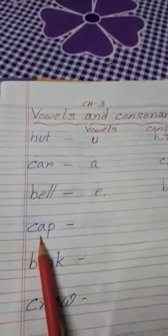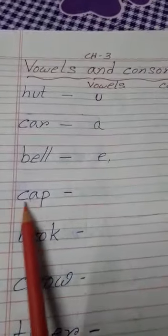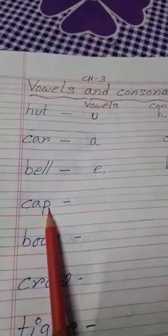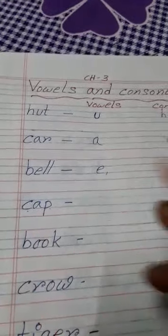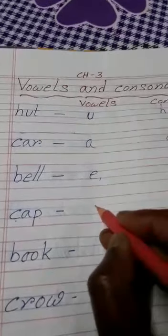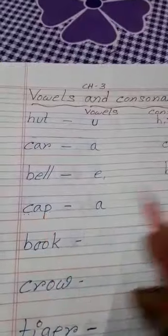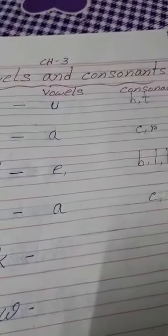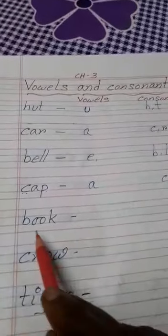Now what is this? C, A, P — cap. Now tell me, which is vowel here? A is a vowel. And C and P are what, children? Consonants. So C and P are consonants.